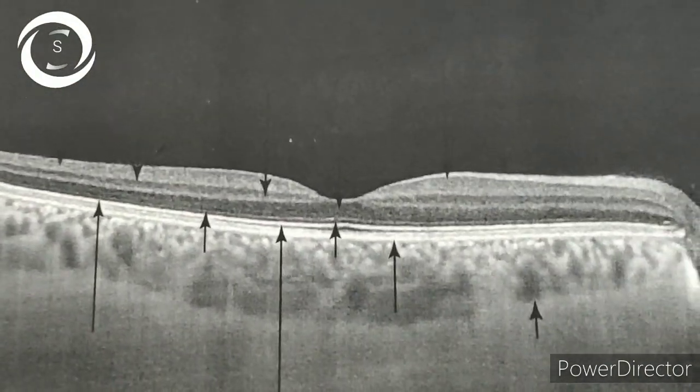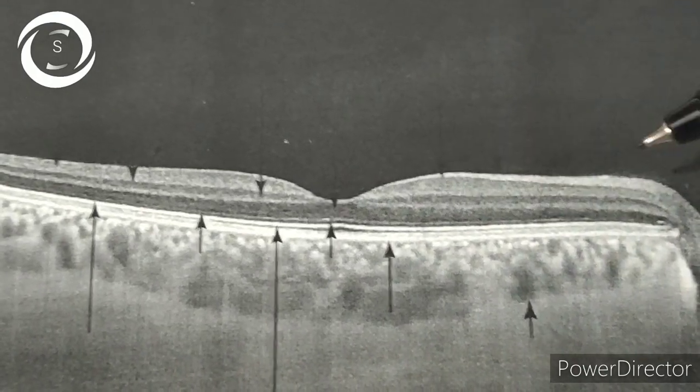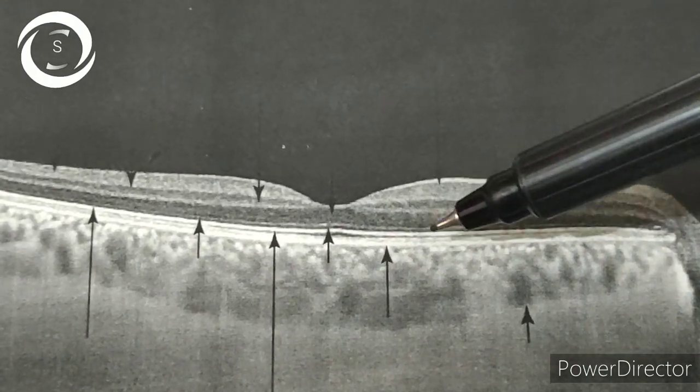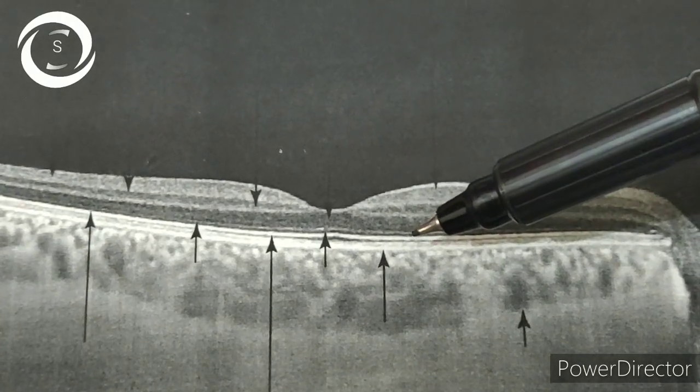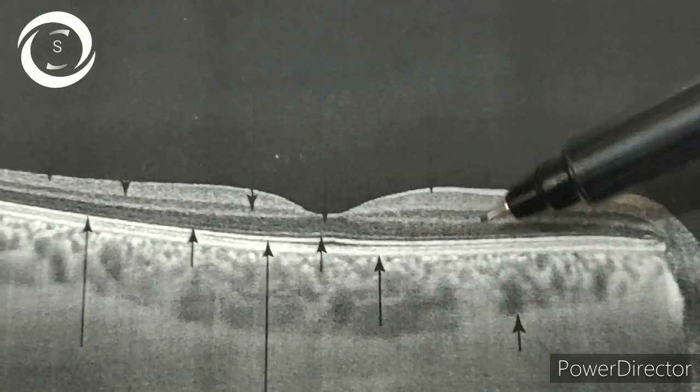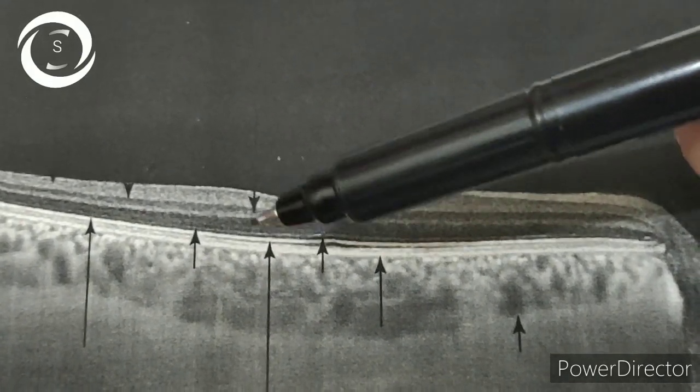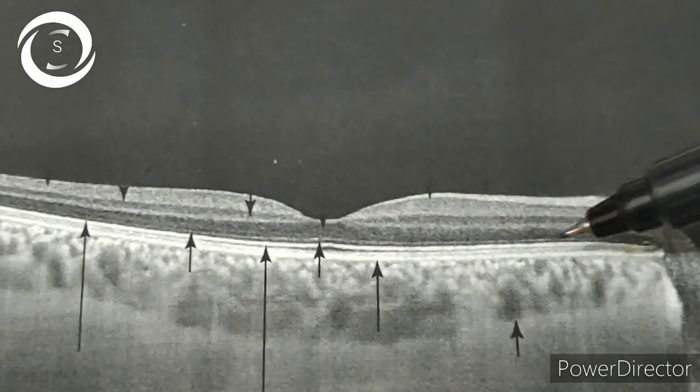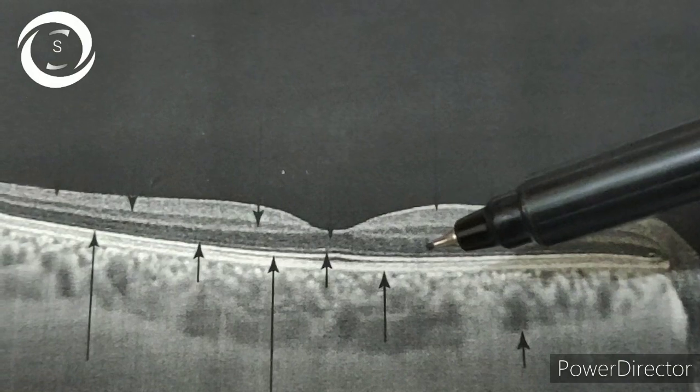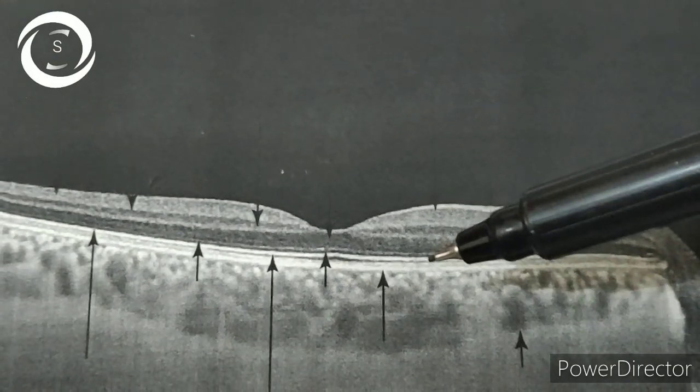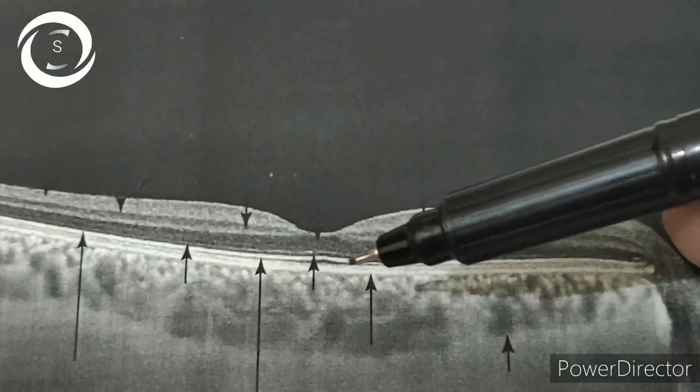We have zoomed it now. That thin line is the external limiting membrane. Below it is hyper-reflective myoid zone consisting of inner segments of the photoreceptors. Beneath it is hyper-reflective line which depicts the most sensitive IS/OS junction, inner segment-outer segment junction, or ellipsoid zone. Stretching of it for long can cause profound visual loss.